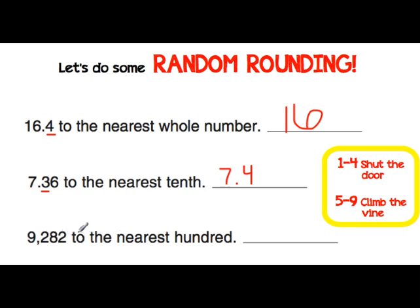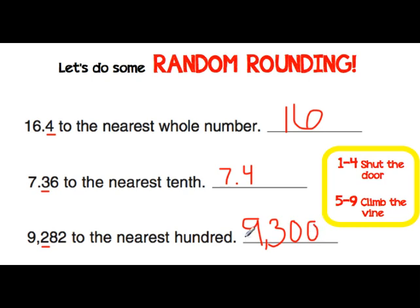9,282 to the nearest hundred — we're going to underline the hundreds place. Singing our place value song: 1s, tens, hundreds, comma. So this is our hundreds place. Looking to the right of the hundreds place, we have an 8. That fits our rule 5 through 9 — climb the vine. So we're going to increase the 2 by 1. The answer is 9,300 because everything after that number turns to a zero.